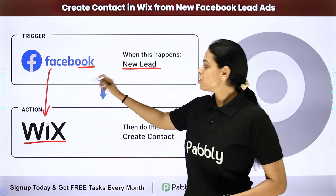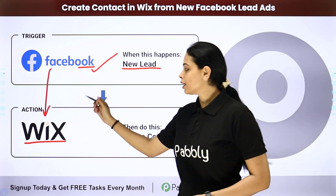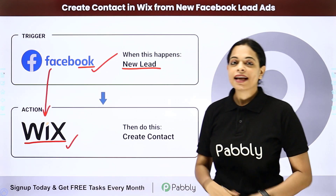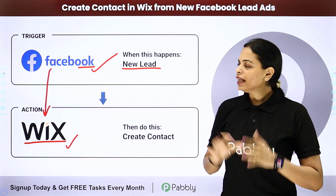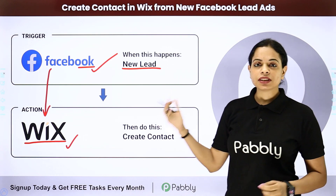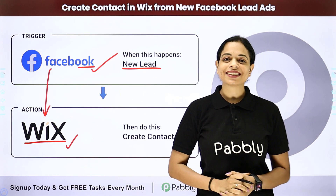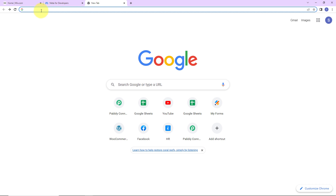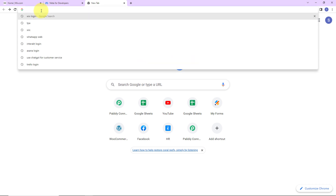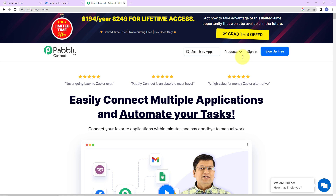Here your trigger application will be Facebook lead ads and your action application will be Wix. To integrate and automate this entire process yourself, we are first going to type the URL pabbly.com/connect, and here we have reached a landing page.